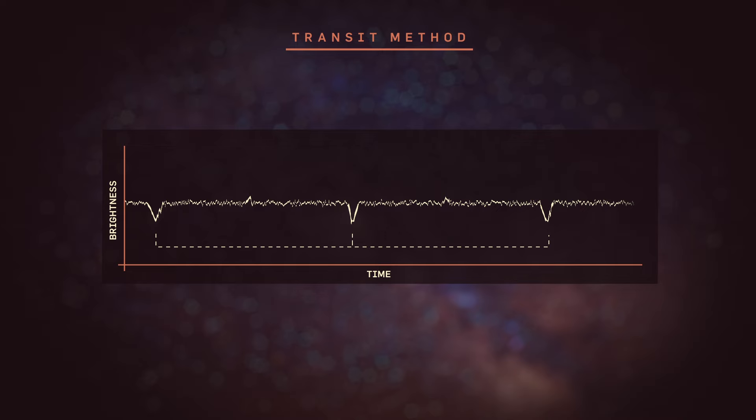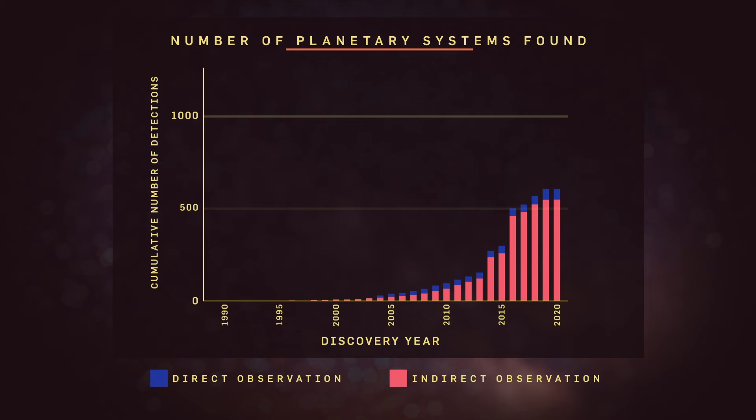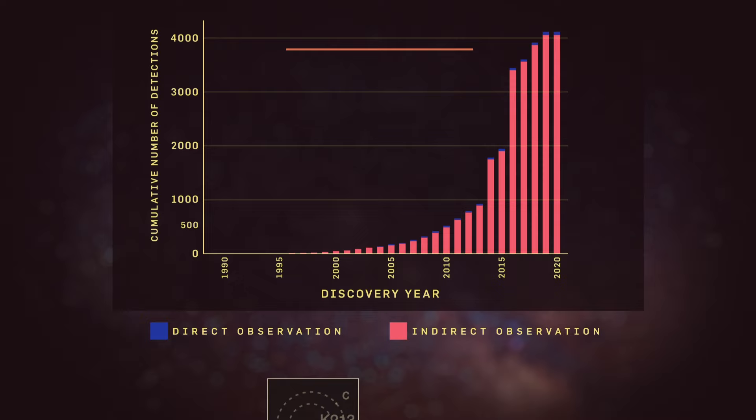That is the method that today has been by far the most successful in finding planets, found thousands, thousands of planets around other stars.